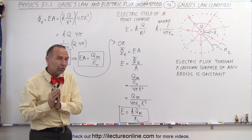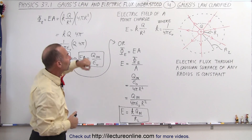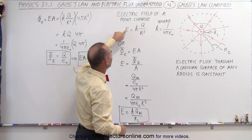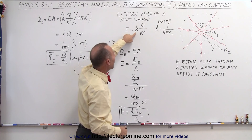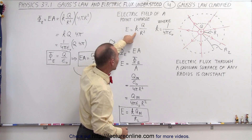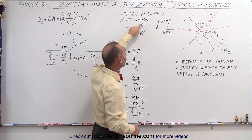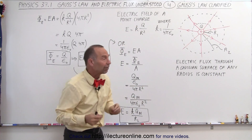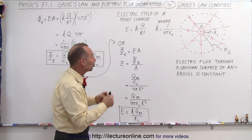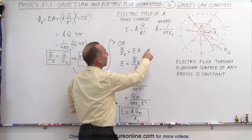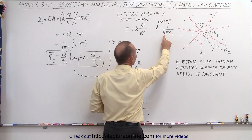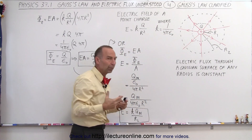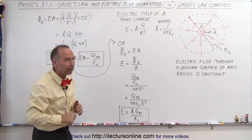We should also remember from a previous video that the electric field of a point charge is equal to K — some constant — times the charge that emanates the field, divided by the distance from that charge squared. And K is defined as 1 over 4π epsilon-sub-nought, where epsilon-sub-nought is the permittivity of free space.